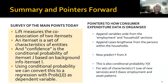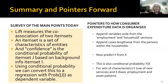Just a survey to conclude. The main points: LIFT measures the co-association of two item sets. An item set is a set of characteristics of the entities — could be their spending, but could be their jobs or some other household aspect. Confidence is the conditional probability of item set J based on the background information from item set I being present. Using conditional probability, we could convert the association rules into a regression with the probability of the J item set being the dependent variable. I made a few pointers to how consumer expenditure data is organized — appending variables, cleaning and appending cases lengthwise, and then predicting Y from X. That is a conditional probability Y given X, with item set X predicting item set Y. For sets of characteristics Y, like using new services, we can use the basic employment pattern to make the prediction.